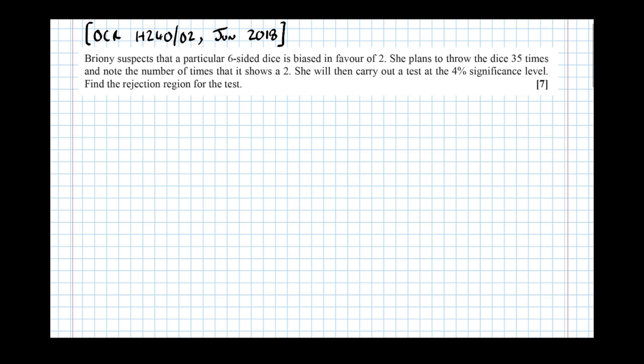Now this is worth seven marks, which is a lot of marks. And just finding the rejection region alone doesn't really warrant getting all seven marks. Actually, and it's not stated in the question, but what you need to do to fulfill all the marking criteria here is to go through the process of writing down all the hypotheses and all that, go through the process of carrying out the test.